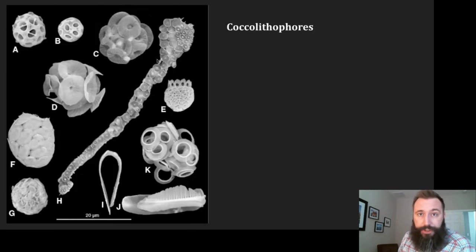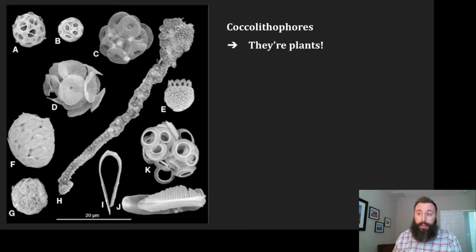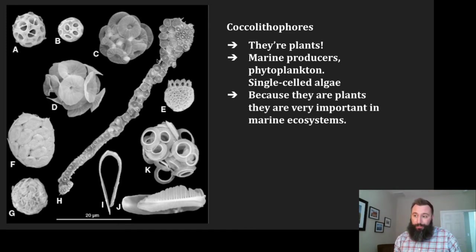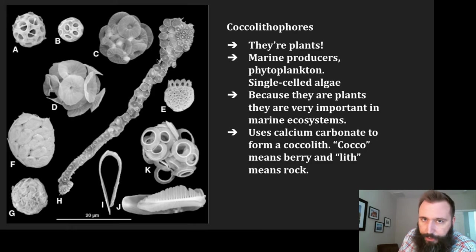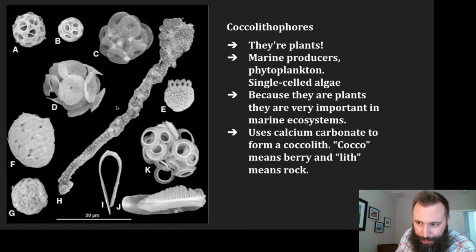Let's talk about coccolithophores because they're kind of interesting creatures. These are microscopic images. They're plants — the open-water plants. There's no soil out there, so there's no way to take root in the middle of the ocean. They make up the producer side of that food web ecosystem. They're able to photosynthesize — single-celled algae that are an important part of the food web because they're producers forming the base of the food pyramid. They use calcium carbonate to build what's called a cocolith. 'Coco' means hard berry, and 'lith' refers to rock — so it's kind of like a hard berry rock, very small, living within these calcium carbonate shells.